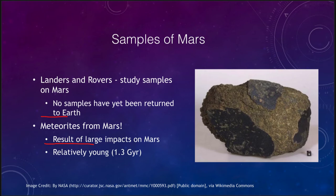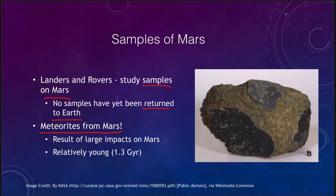What kind of samples of Mars can we study? We actually do have some samples of Mars here on Earth. The landers and rovers have studied samples on Mars, but we have not yet had any samples returned to Earth — no craft has gone to Mars, picked up samples, and brought them back to study in the laboratory. However, we do have meteorites from Mars that have been detected here on Earth showing features that relate to them being from Mars.